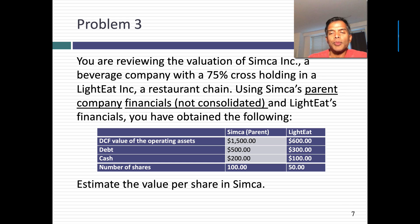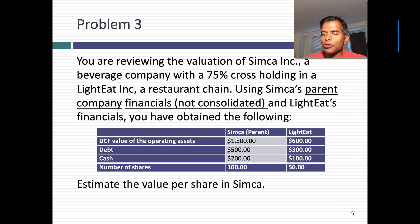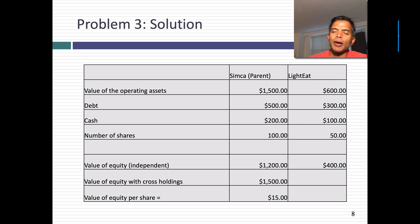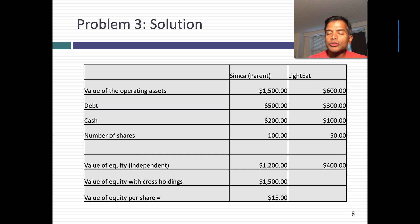The third problem: you're given a parent company, Simca, with a 75% holding — again more than 50%, so it's consolidated into the restaurant chain subsidiary. But in this problem I'm very specific: I'm giving you the parent company financials, not the consolidated, plus the subsidiary financials. When you have just the parent company, you haven't counted any of the subsidiary. So I value the parent as a standalone company, value the subsidiary as a standalone company, and add 75% of the value of the subsidiary to the parent value. View the first three problems together — the logic is to avoid double-counting or missing something.